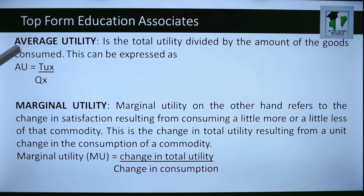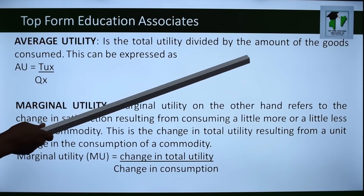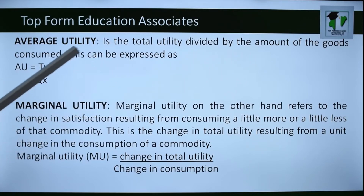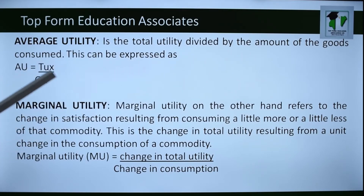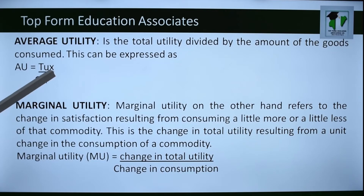Average utility is the total utility divided by the amount of goods consumed. It can be expressed as: AU = TUx divided by the quantity consumed of commodity X.